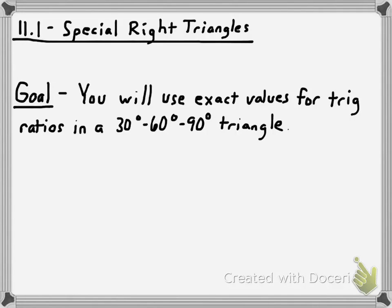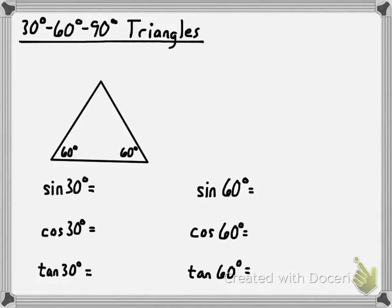Hey, everybody. We're continuing our discussion on special right triangles in this video. Last video, we looked at 45-45-90 triangles and saw how we could use the exact values for sine, cosine, and tangent of 45 degrees to find missing measurements in that type of triangle. This time, we're again going to be looking for exact values for trig ratios, but in a 30-60-90 triangle instead of a 45-45-90 triangle.